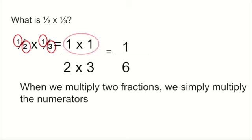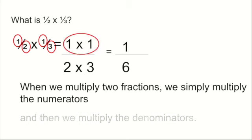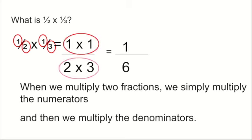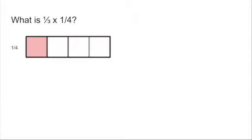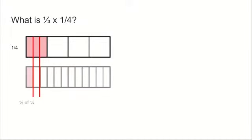When we multiply two fractions, we simply multiply the numerators and then multiply the denominators. So what is one third times one quarter? I'm going to take a quarter, split it into three equal pieces, and take one of those pieces. One third of one quarter equals one twelfth.